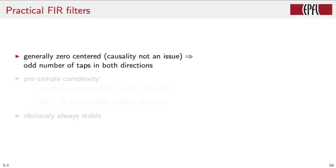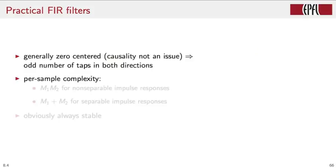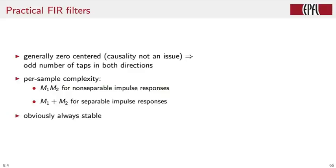One of the advantages of having the whole image available for processing at the beginning is that causality is no longer an issue. So we can design FIR filters whose impulse response is symmetric around zero, and therefore they introduce no delay. A consequence is that the number of taps of the impulse response will be odd in both dimensions. The per-sample complexity of an FIR filter is M1 times M2 operations per sample, where M1 and M2 are the dimensions of the support of the filter. However, in the case of separable FIRs, these computational requirements drop down to M1 plus M2. And just like in the 1D case, FIR filters are always stable.